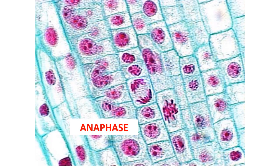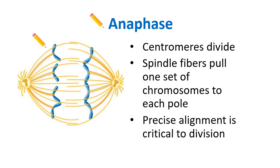Once chromosomes have lined up in metaphase, we go into anaphase. The key thing in anaphase is that the chromosomes have been pulled apart and separated into their two half sister chromatids. The centromere splits apart, and spindle fibers — like people pulling a tug-of-war rope — pull the sister chromatids apart, with one set pulled to each side. The spindle fibers control all this precise alignment.